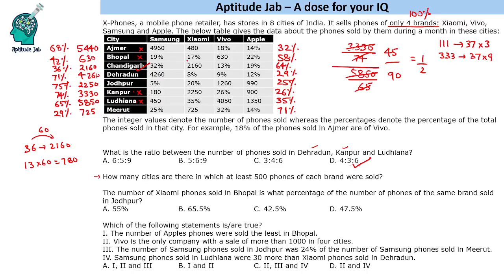For Dehradun: 4260 is a very large number at 71%, factor of 60. The smallest value is 8%, and 8 × 60 = 480 — so Dehradun is ruled out. For Jodhpur: 2250, factor of 30, smallest value is just 5%, which cannot be 500. For Merat: 29% is 725, factor of 25. The smallest is 14%, and 14 × 25 = 350 — so that also does not give 500. So only Chandigarh is the city where at least 500 phones of each brand were sold. We avoided unnecessary calculations.